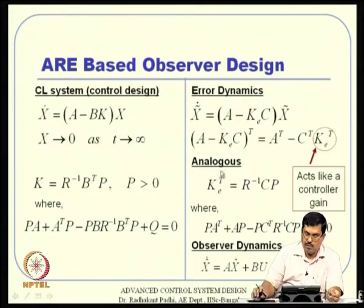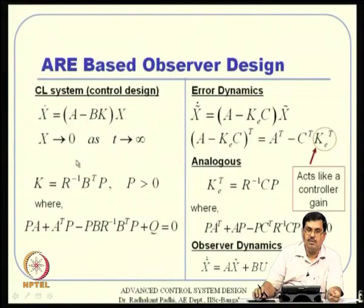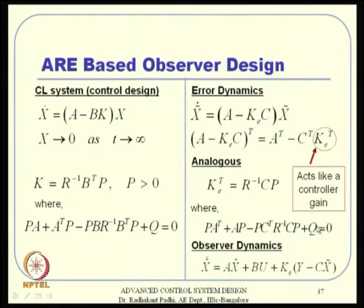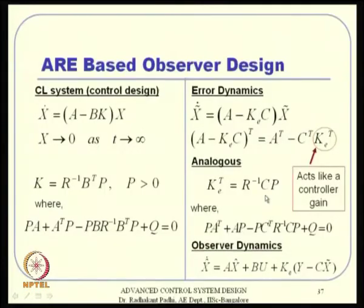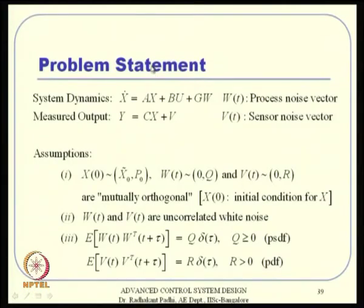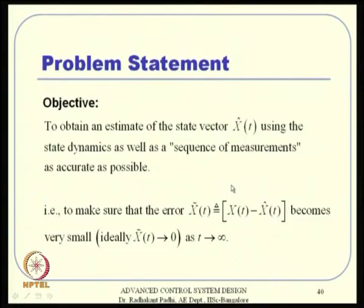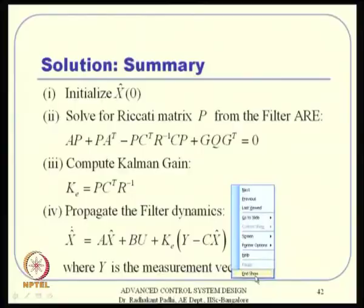We proposed that K_e-transpose should be designed similarly to the LQR gain — so instead of R-inverse B-transpose P, you have R-inverse C times P, and P is the solution of the filter Riccati equation. The observer dynamics turns out to have a well-defined design method. Towards the end of last lecture, we mentioned that if you consider system dynamics with process noise and sensor noise, the filter dynamics remains similar — and that is the detail we will explore further today.